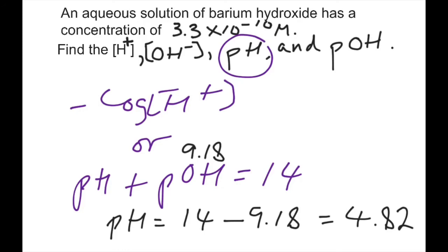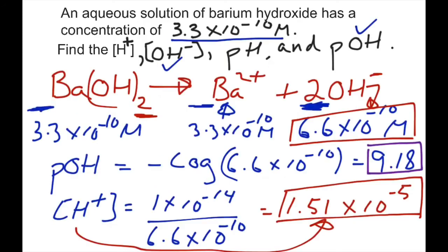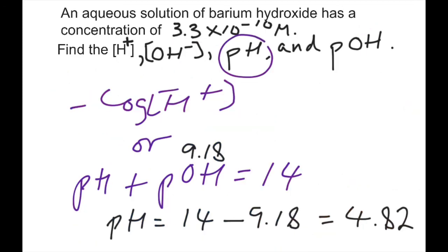You can do this check. You can take the negative log of H plus concentration, which was 1.51 times 10 to the negative 5, and see if you get that 4.82 as your answer.